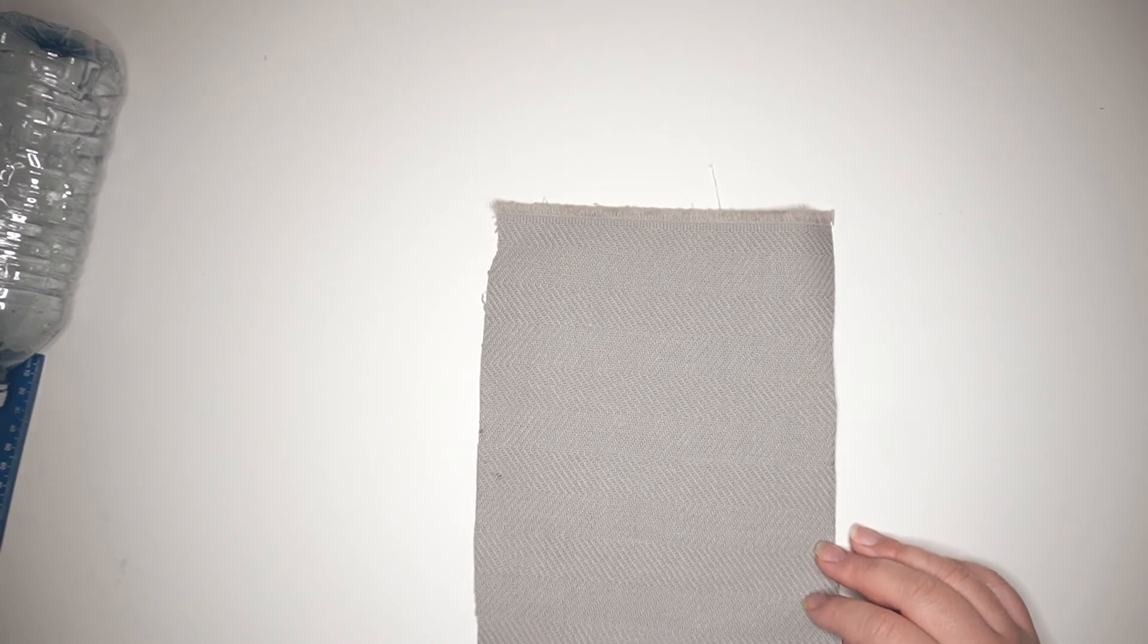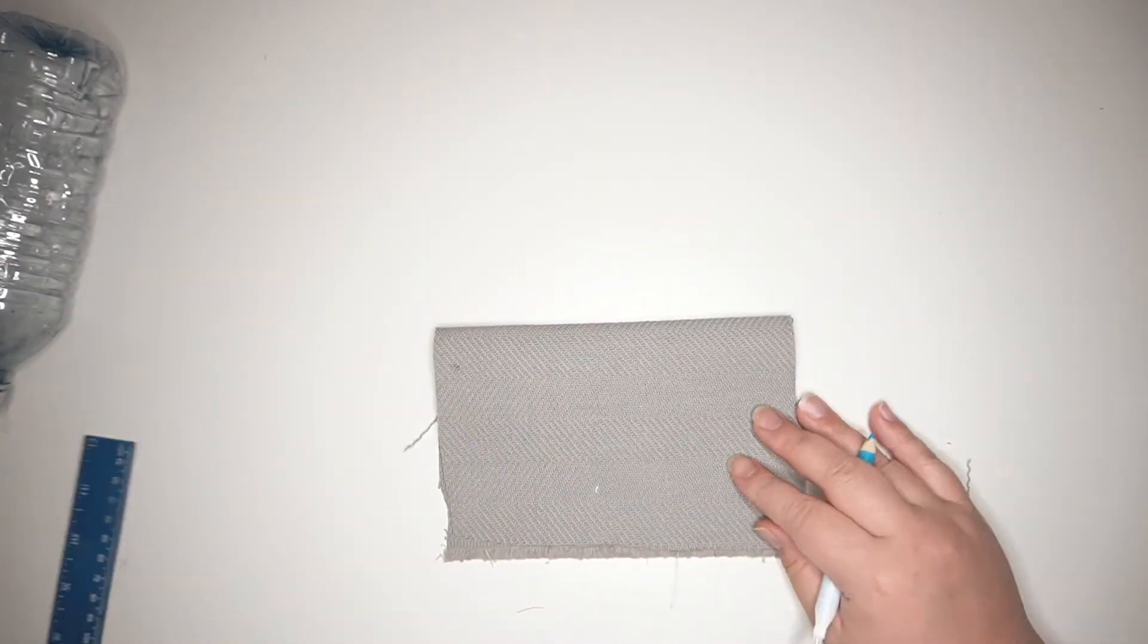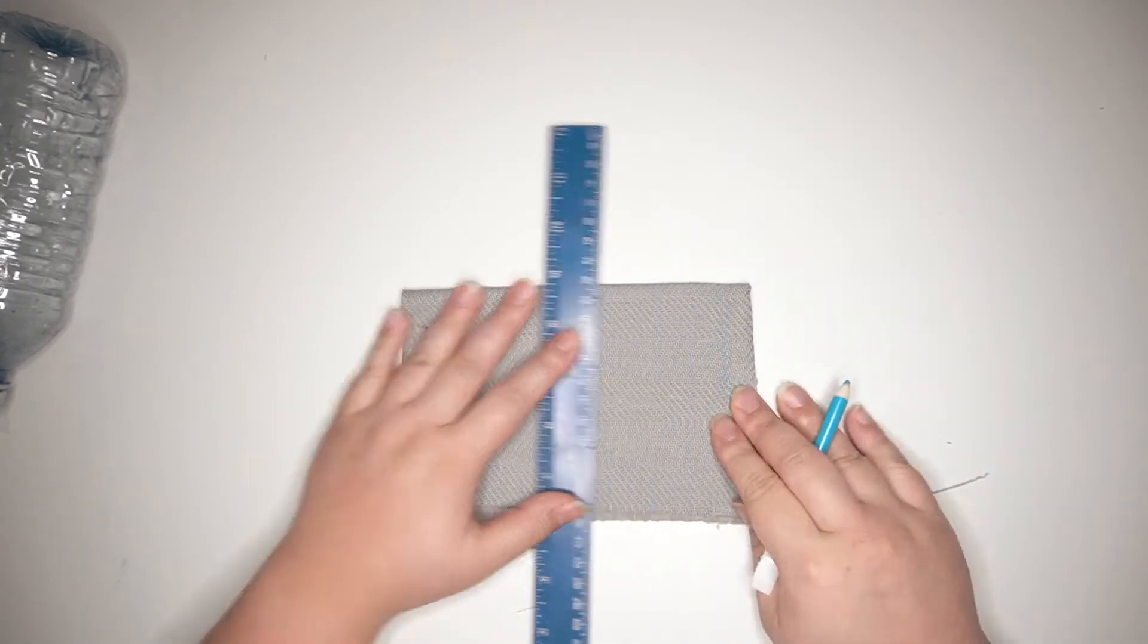I'm starting off with this thick woven gray fabric to make the toy more durable. For the smaller version of the toy, I will be cutting a small rectangle. This is completely up to you what size you'd like it to be.